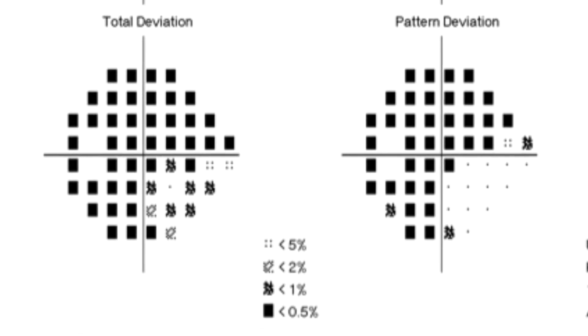Here is yet another way to get a feeling for those numbers. The total deviation plot allows you to learn what chance there was that the patient would have achieved those test point scores if he or she had a normal field. The darker the squares, the lower the probability that those test points are normal. For example, completely black squares mean that the chances are less than 0.5% that the visual field is normal at those test points.